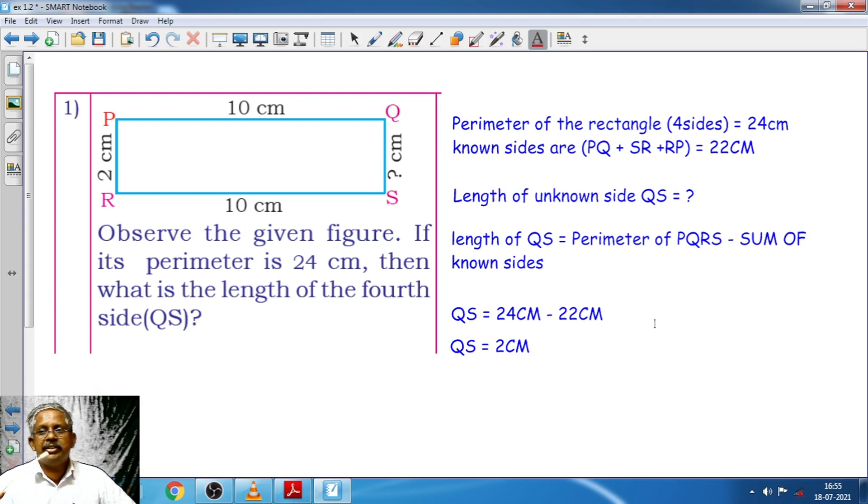So when I complete this side, I arrive at QS the unknown side is equal to 2 cm. This is one such sum.